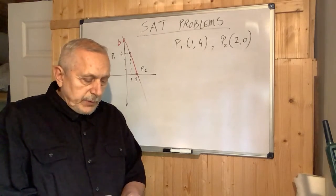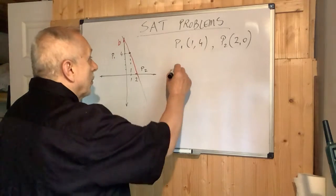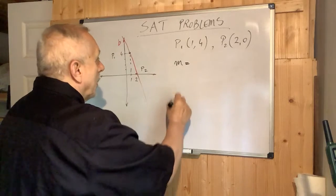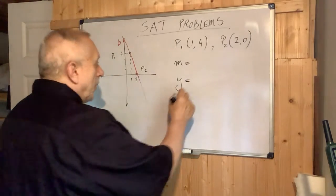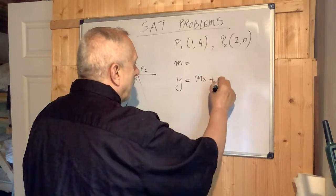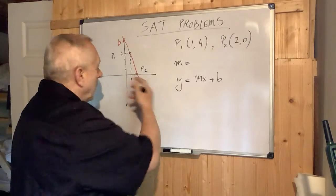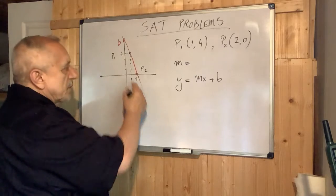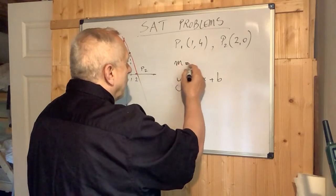If you'd like to do it yourself, stop the video here. If not, let's continue. We're going to apply the slope formula. We need the slope-intercept form, which is y = mx + b. We have to find out what is the equation for this line.